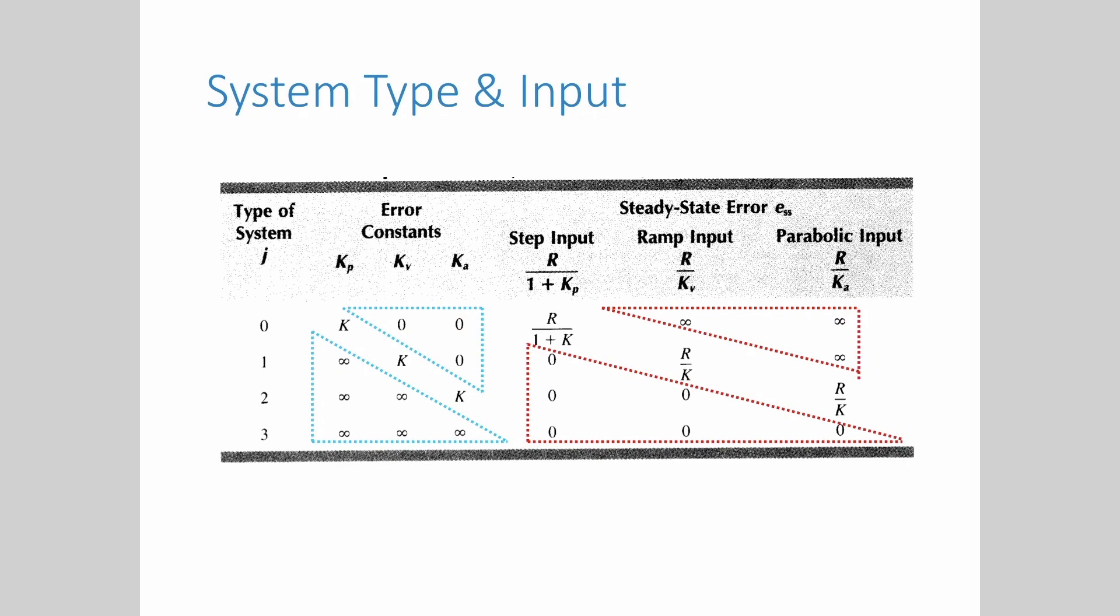You can easily memorize the value of the static error constant and steady state error by referring to the table of system type and input. You can draw triangular pattern for groups of zeros and group of infinities. Since most steady state errors are inversely proportional to the static error constant, you just need to memorize either one. Infinity static error constant means zero steady state error while zero static error constant means infinity steady state error and vice versa.